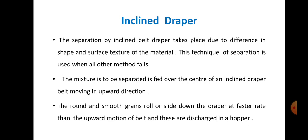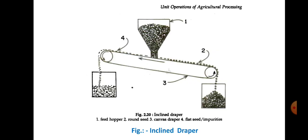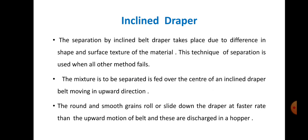In operation, the mixture to be separated is fed over the center of an inclined draper belt moving in an upward direction, as shown in the figure. In this inclined draper belt separator, the hopper is provided at the center over the revolving belt.